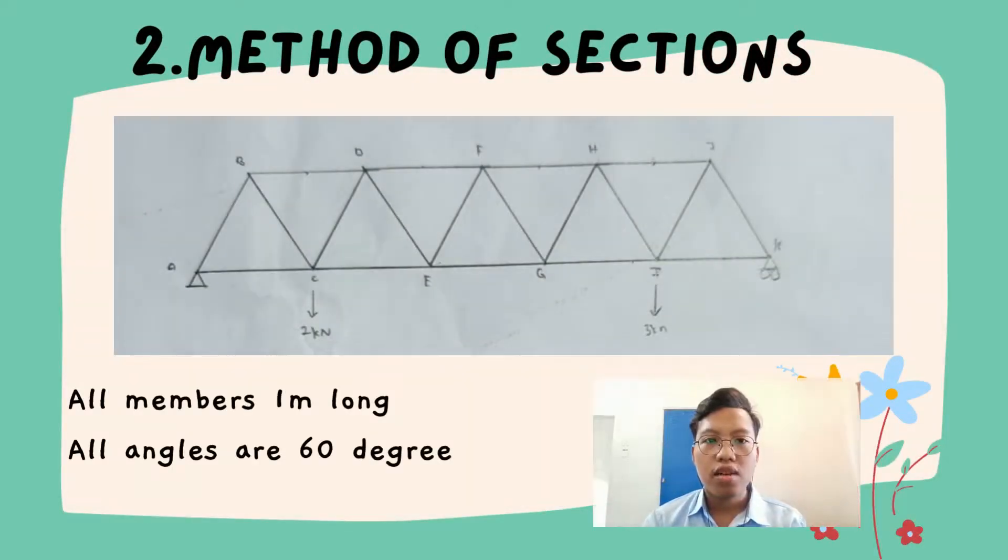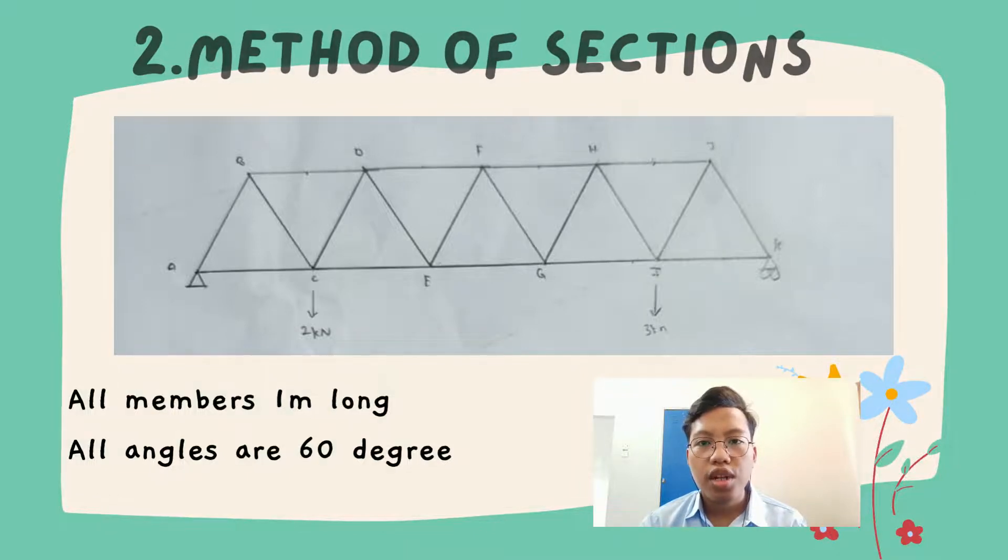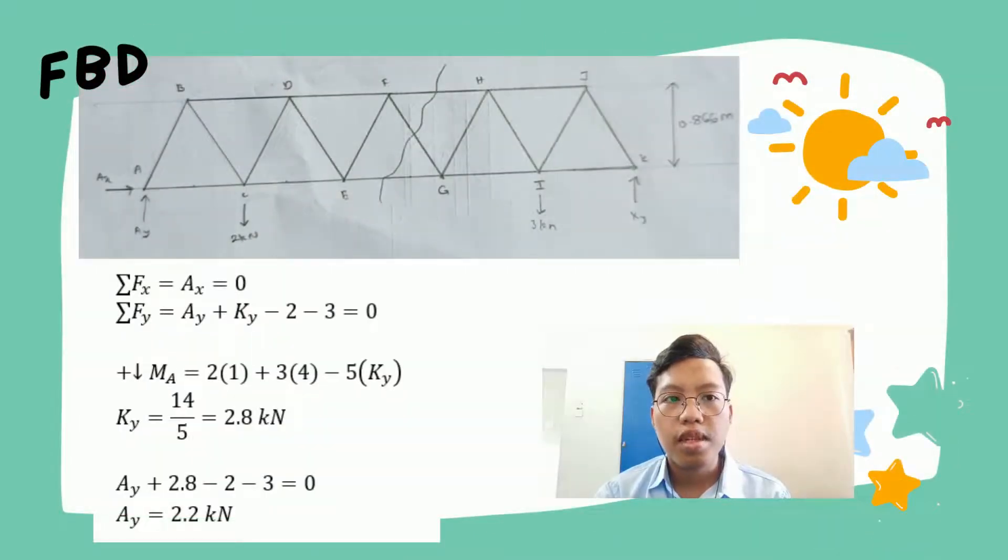The second calculation is method of sections. All members are 1 meter long and all angles are 60 degrees. In the given diagram, we have two forces: 2 kN at point C and 3 kN at point I. First, we will draw the FBD. As usual, at point A, we will have AX and AY. And at point K, we will have one force which is force KY. Sum of FX equals AX equals zero. Sum of FY, we get AY plus KY minus 2 minus 3 equals zero. Why minus 2 and minus 3? We have two forces, 2 kN and 3 kN at points C and I.